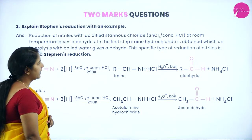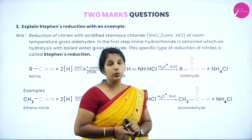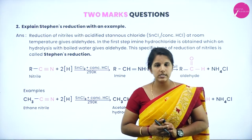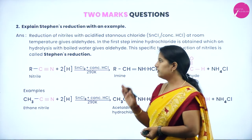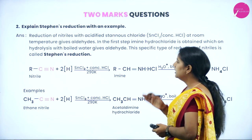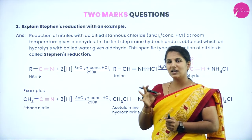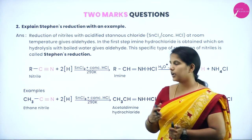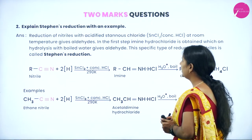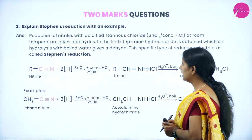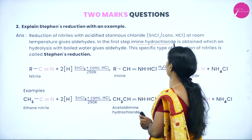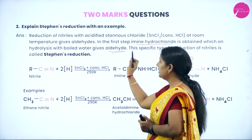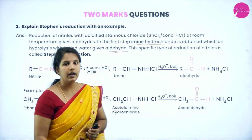Explain Stephen reduction with an example. The reagents used are stannous chloride with concentrated HCl. A nitrile is reduced to an aldehyde. In the first step, stannous chloride reacts with concentrated HCl to form stannous tetrachloride along with H⁺ ions. These H⁺ ions react with the nitrile to form an imine hydrochloride complex, in which one bond between carbon and nitrogen is broken. This is known as Stephen reduction.